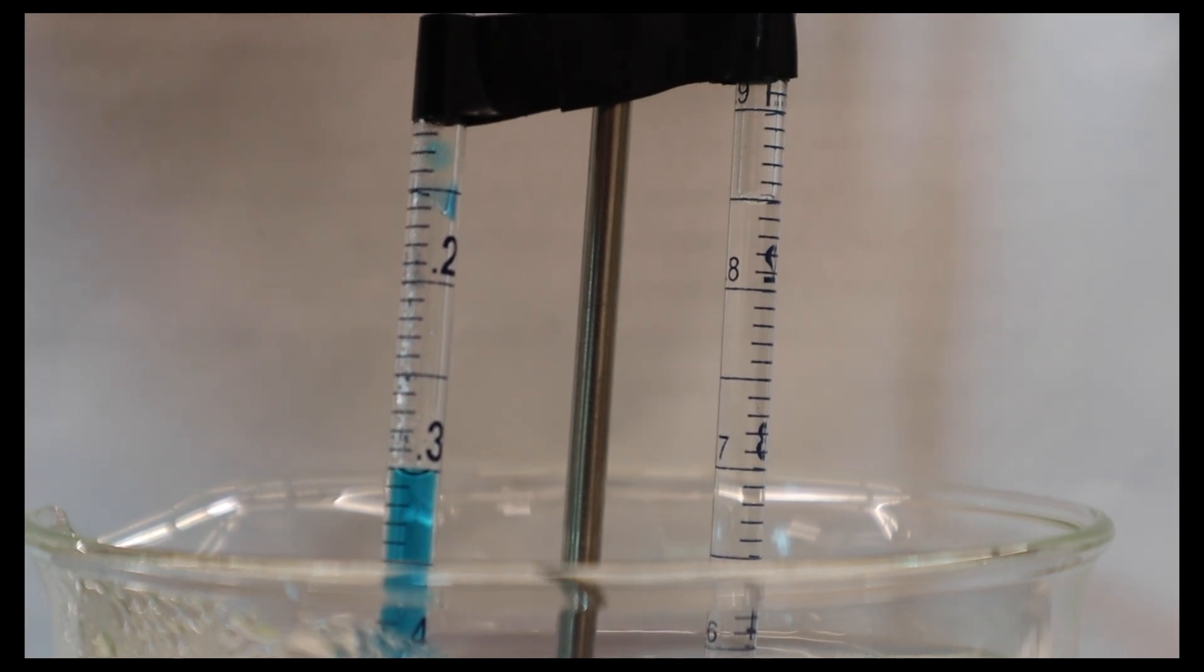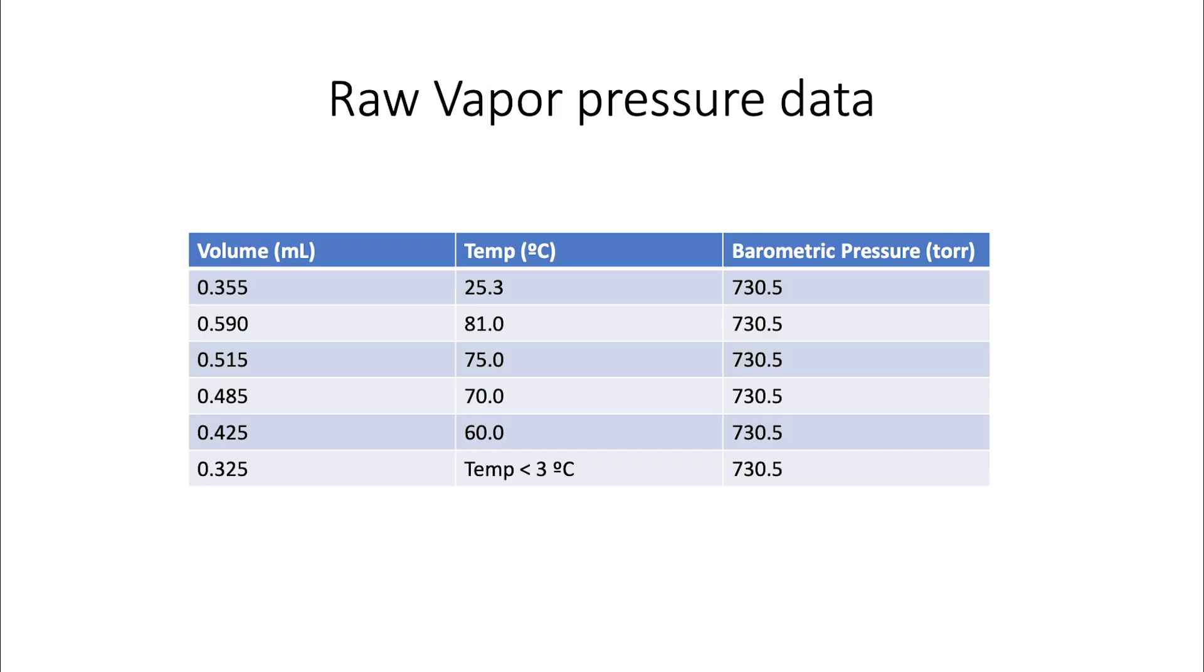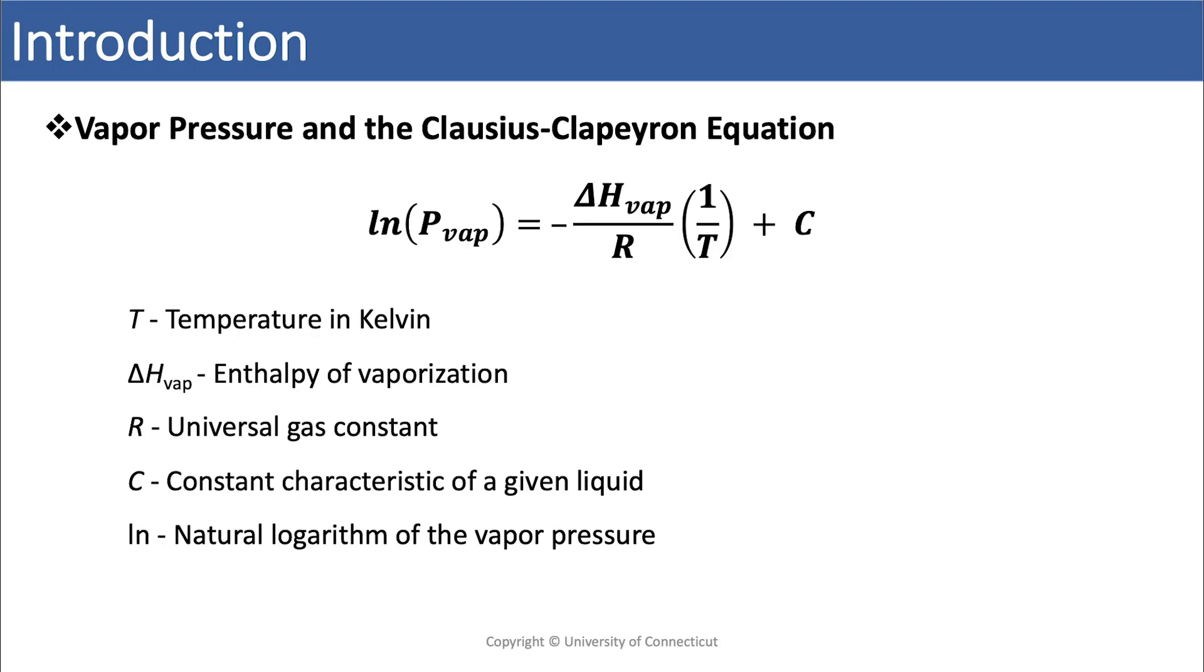You make all these measurements and you get the data. And so here's the raw data. We have the volume of the bubble, we have the temperature, and we have the barometric pressure of the outside air. But that's not quite getting us to this Clausius-Clapeyron equation yet.